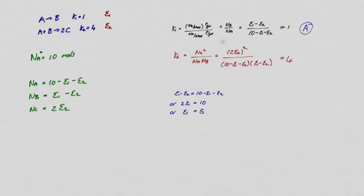I now need to look at equation 2, and I can substitute this value of E1 in here, and then try and solve for E2. So let's have a look at how we do that. Taking that equation, K2, which is 4, is equal to 4E2 squared. I've multiplied that out: 10 minus E1, which is 5 minus E2, times E1 minus E2, so that's 5 minus E2, and I simplify that, this becomes 5 minus E2, so I have 5 minus E2 squared.